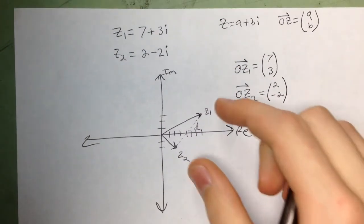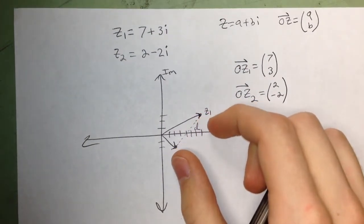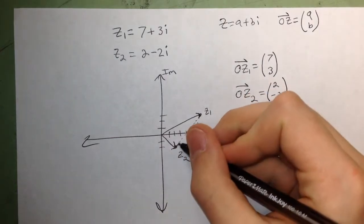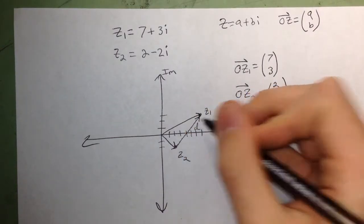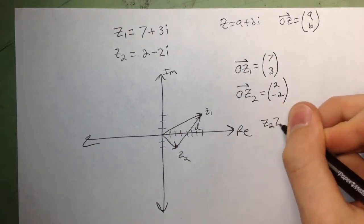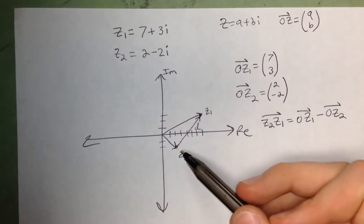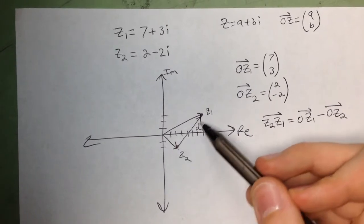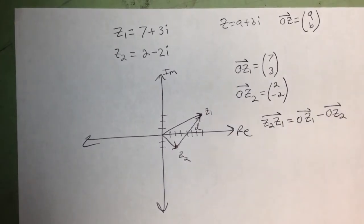So then in order to find the magnitude, we want to find this vector so we can take the magnitude of it. That would be the position vector from z2 to z1. We're going to find the vector that represents this change in location.